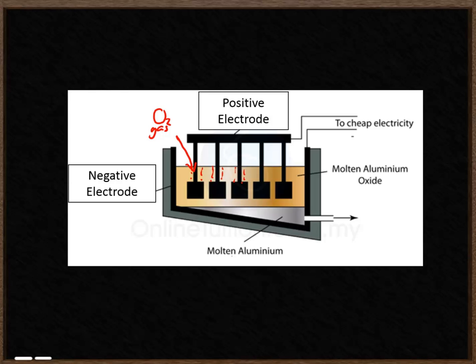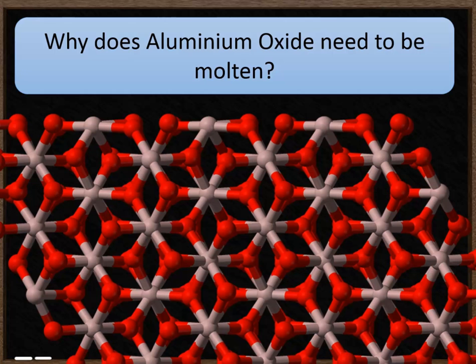Around the negative electrode, this is where your aluminium forms. Aluminium is heavier than aluminium oxide. So the aluminium will form at the bottom and will sink down and can then be siphoned off at the side.